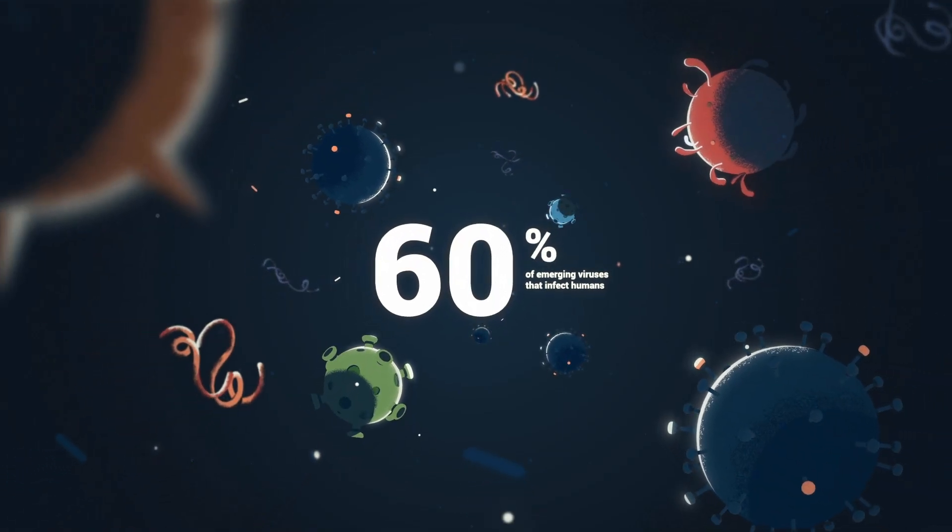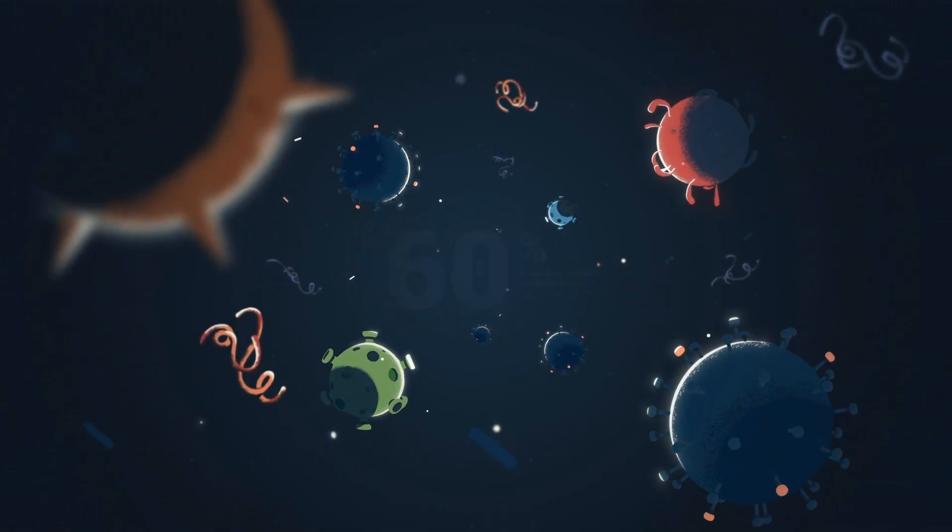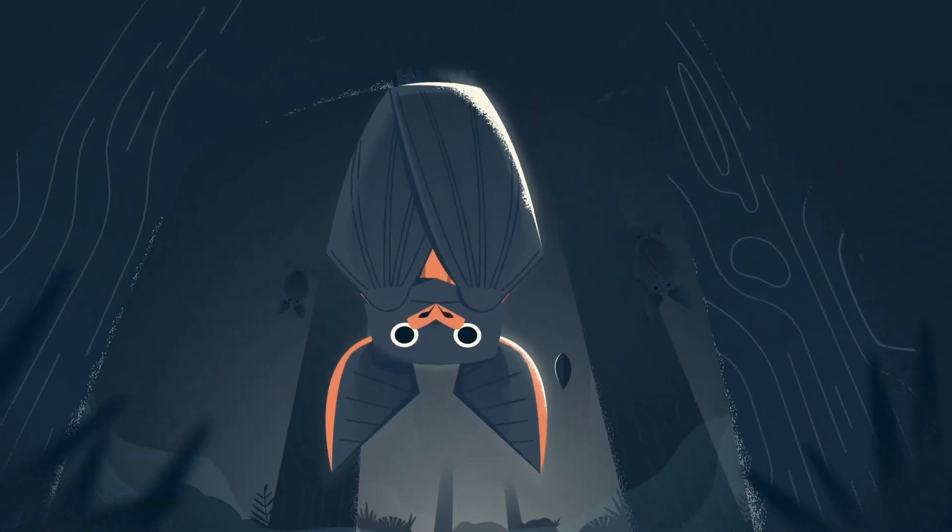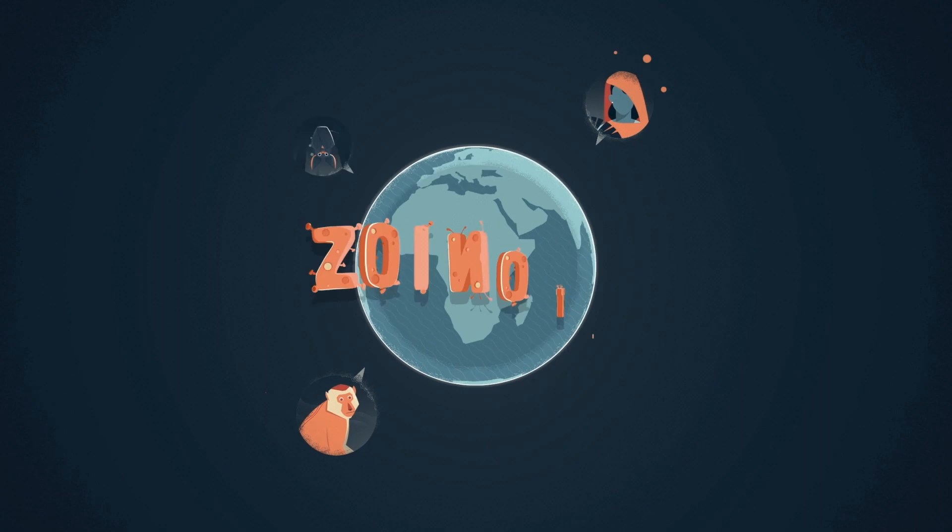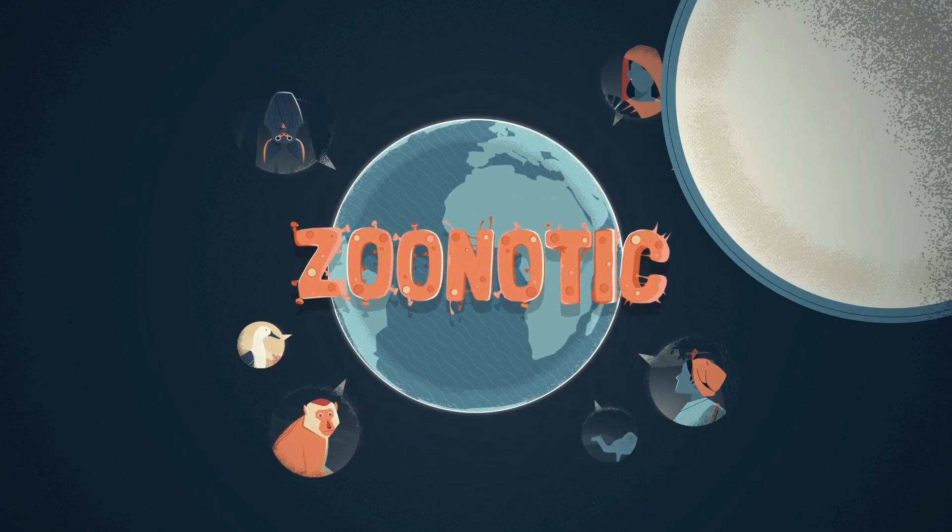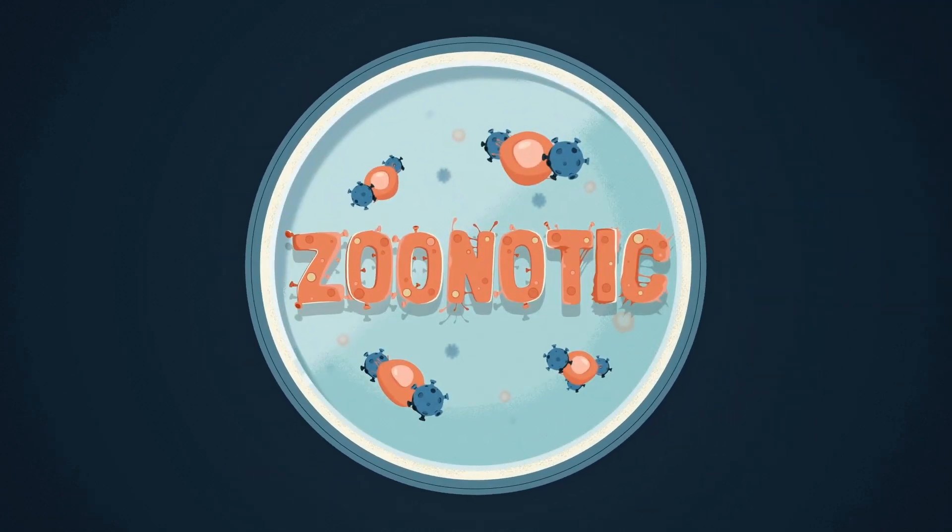More than 60% of emerging viruses that infect humans originate in animals. For a healthier global future, it's essential to study how these zoonotic viruses spill over and emerge in human populations.